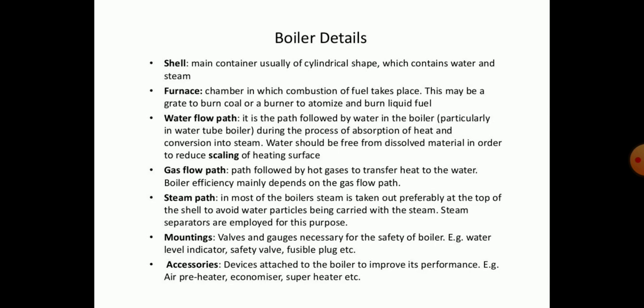Mountings and accessories have been covered in previous lectures. Mountings are the valves and gauges necessary for the safety of boilers — for example, water level indicator, safety valves, and fusible plugs. Accessories are devices attached to the boiler to improve its performance — for example, air preheater, economizer, and superheater. Now we look at the fire tube boiler.